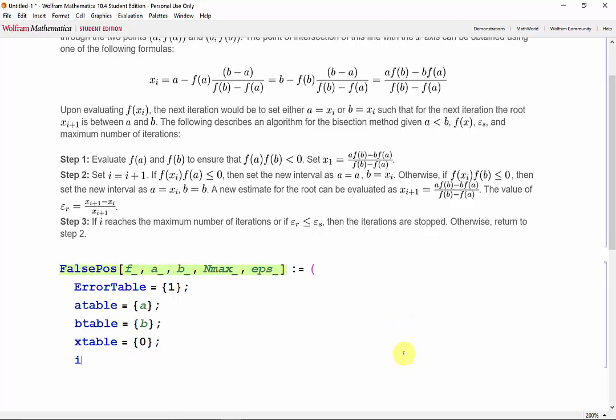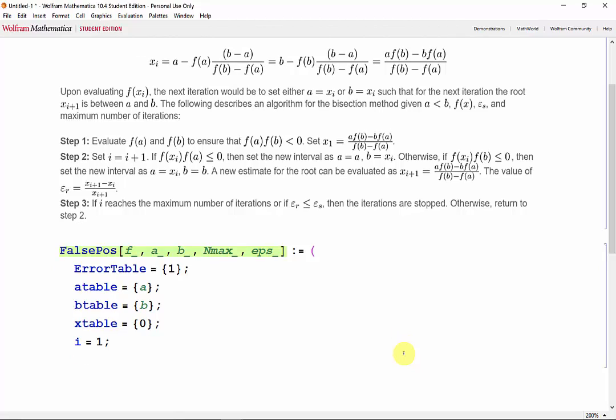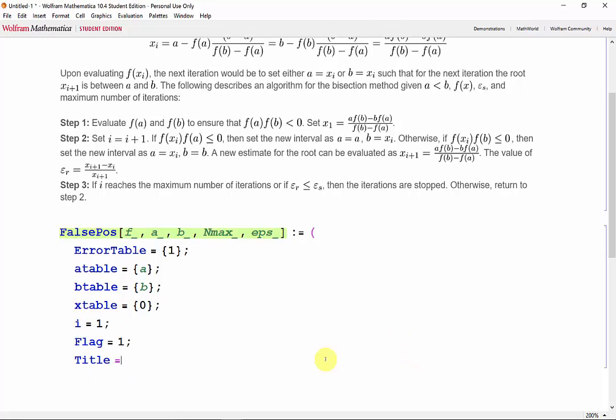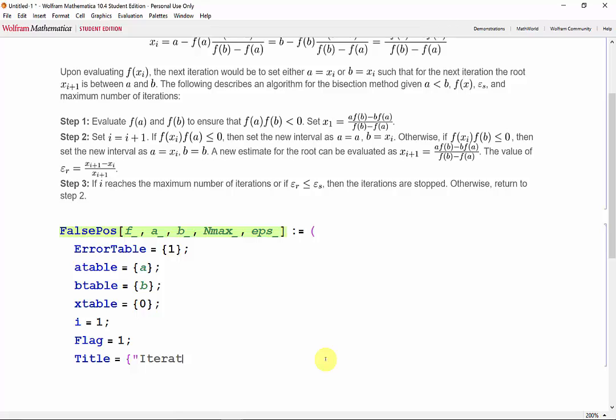And we need our iterator i and our flag, which will stop the loop.